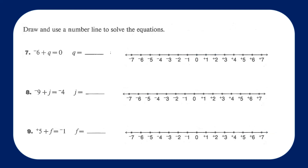Question number 7: we're going to start at the integer negative 6 and we want to land on 0. We're going to have to move to the right 1, 2, 3, 4, 5, 6 spaces — that's moving positively or increasing. So I can write that as plus 6, positive 6, or just 6. Negative 6 plus positive 6 equals 0.